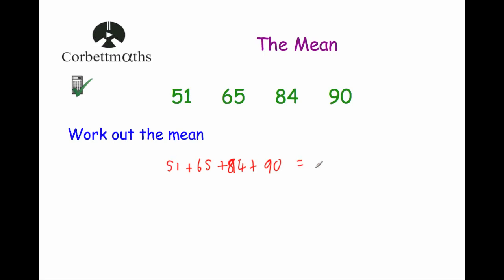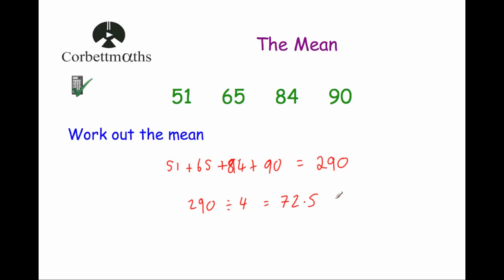When we add up those four numbers, we get 290. And then to work out the mean, we divide by 4 because there are four numbers. So 290 divided by 4 is equal to 72.5. So the mean for these four numbers is equal to 72.5.